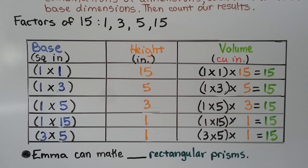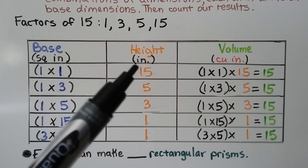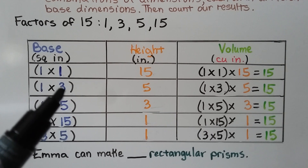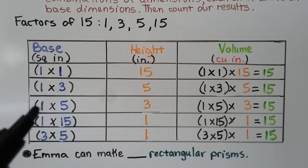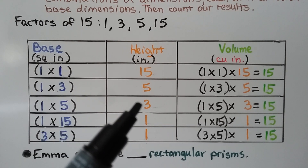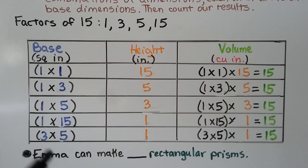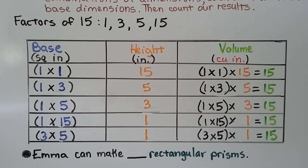Using the factors, we complete our table. We can have a base of 1×1 unit that is 15 inches high. We can have a base of 1×3 with a height of 5. We can have a base of 1×5 with a height of 3. Or 1×15 with a height of 1. Or 3×5 with a height of 1. They'll all have a volume of 15 cubic inches.